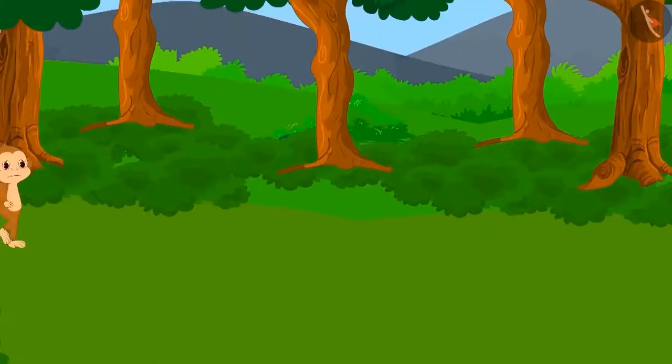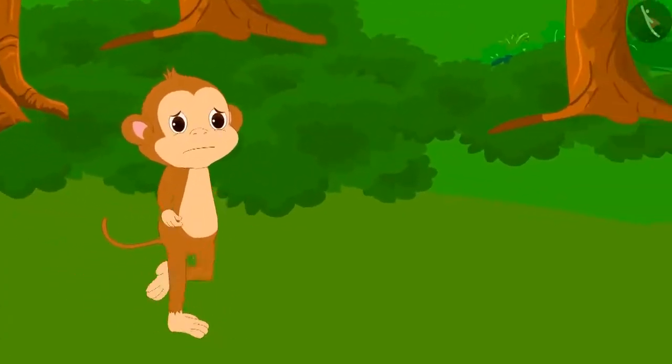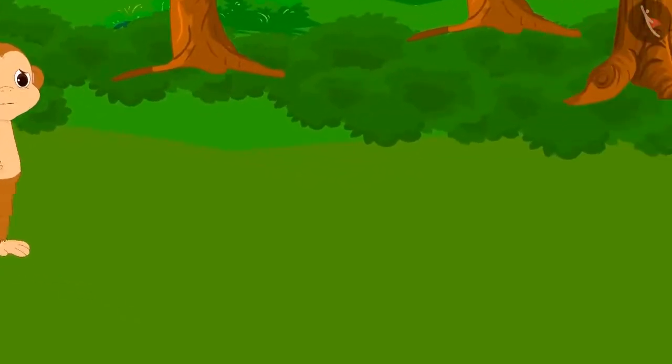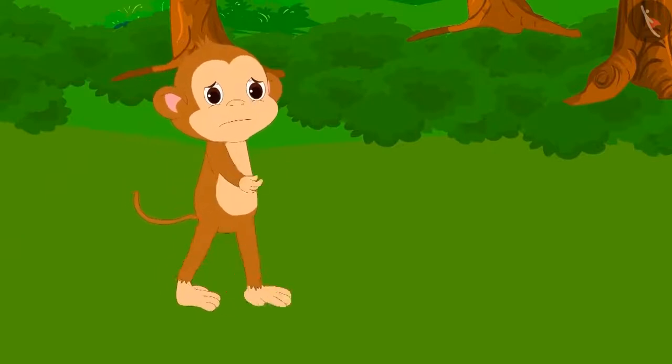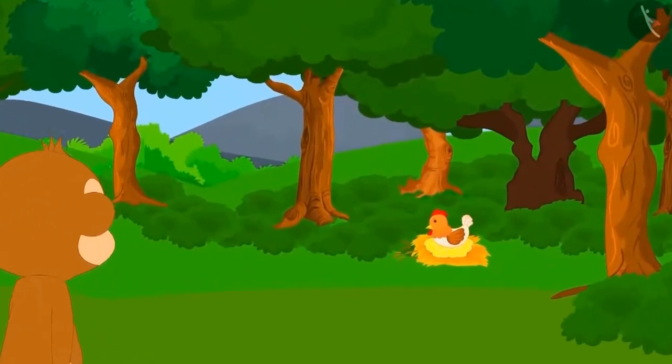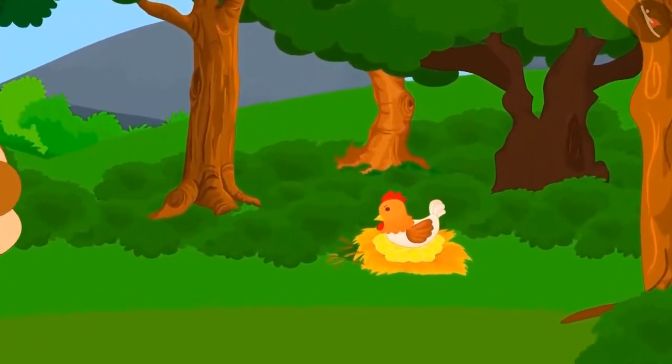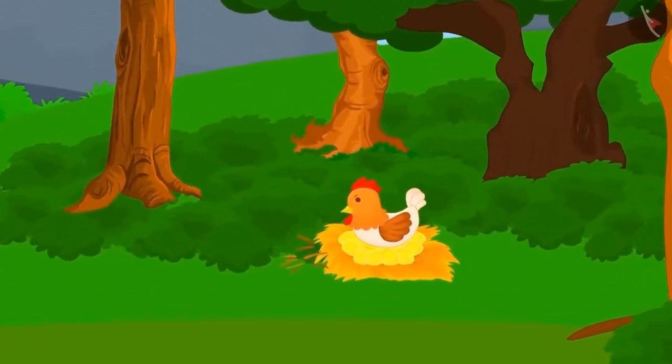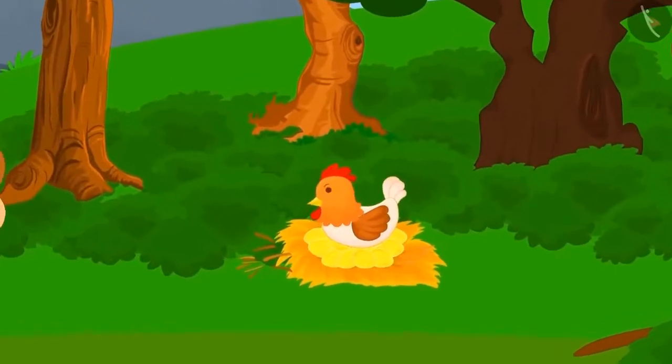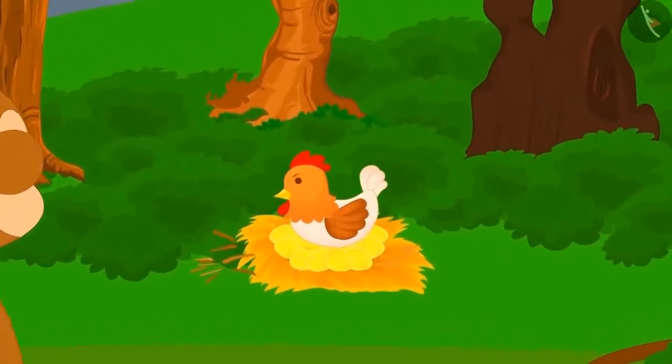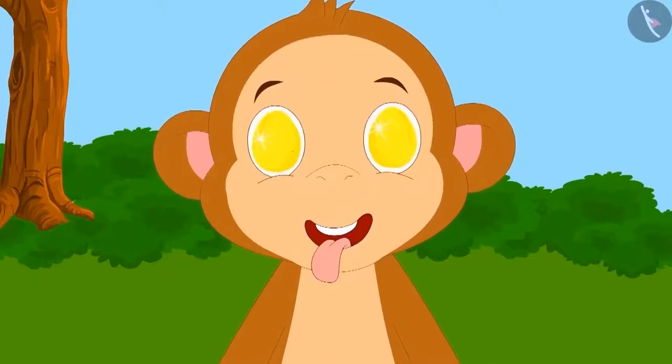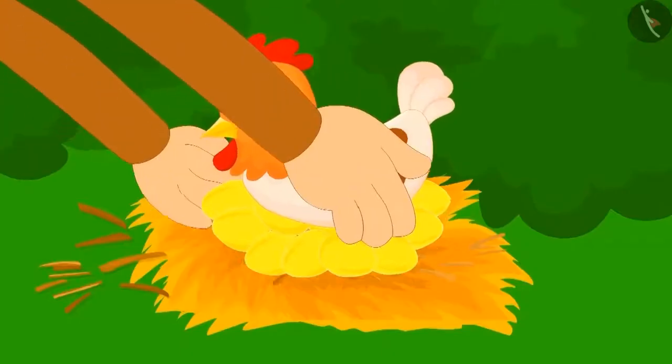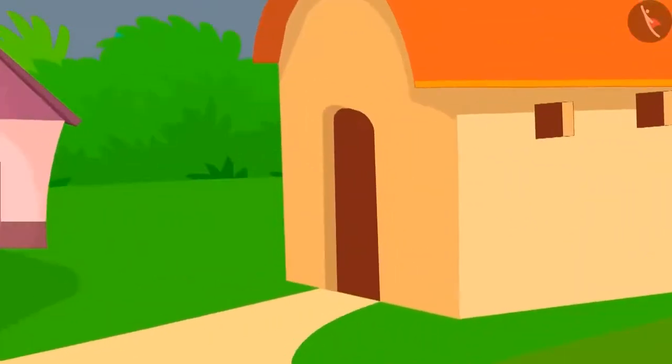One day, Baban was wandering in the forest and regretting how he lost all the three wishes he had got from the genie. Then he saw a hen there, but there was something special about this hen. She was sitting on a pile of golden eggs. There were a total of twenty-three golden eggs. Baban was very happy and he took the hen and all the golden eggs and went home happily.